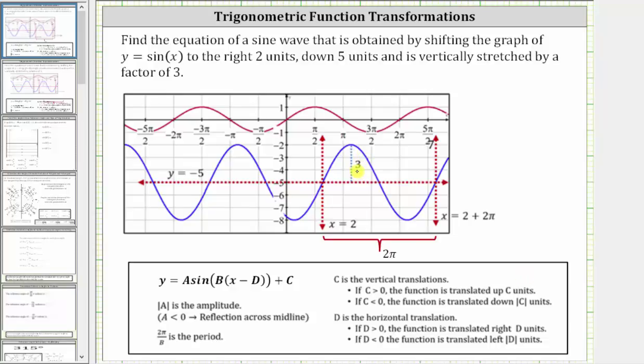So because the amplitude is three, and there's no reflection across the midline, a is equal to positive three. Because the period remains two pi, and two pi divided by b is equal to the period, b is equal to one.